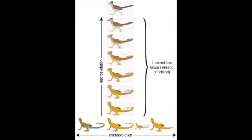Among the laymen, transitional forms are often conceived as direct blends between modern species, a misconception that is frequently exploited by creationists to parody evolutionary theory. However, such chimeras are not a prediction of evolution and would actually count as evidence against it.